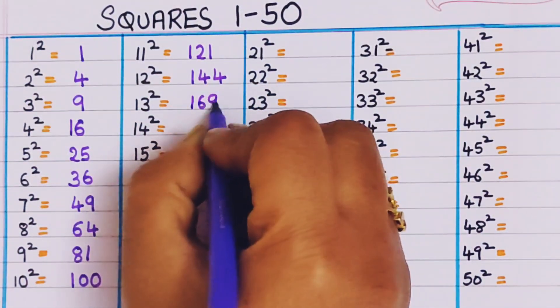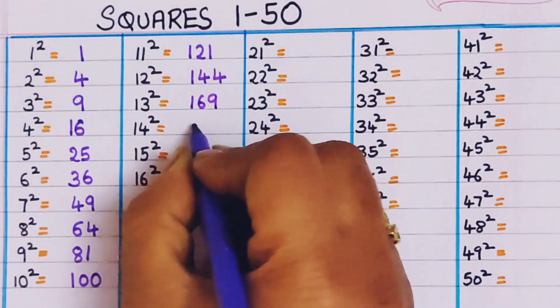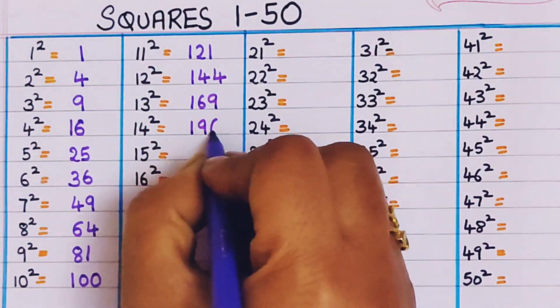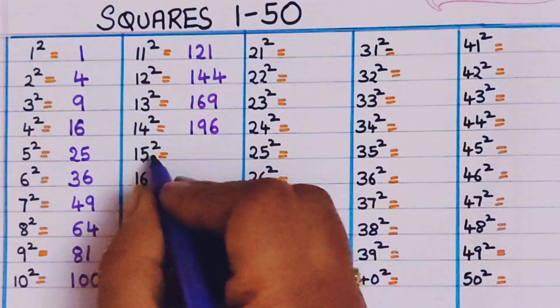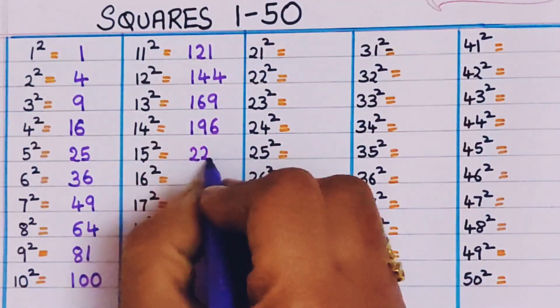13 square, 169. 14 square, 196. 15 square, 225.